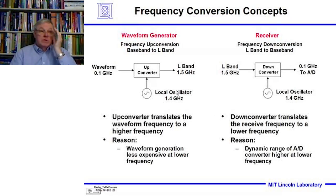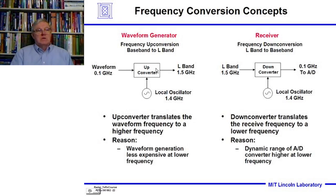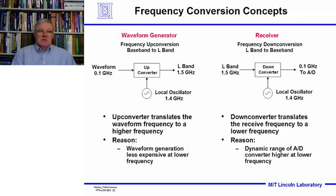Now what do we really mean by up-conversion and down-conversion, and why? In the waveform generator on the transmit side, we start off with 100 megahertz — a tenth of a gigahertz waveform — that's easy to generate, nice and stable, and very low cost. Then when we up-convert, we have an oscillator that's very precise, in this case 1.4 gigahertz. When we up-convert, we're essentially adding the two frequencies. This device is known as a mixer, and when you add two signals together, you get both the sum and the difference. For up-conversion, we're looking at the sum of the two signals.